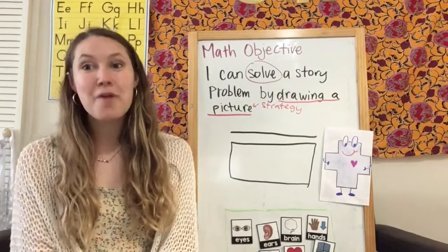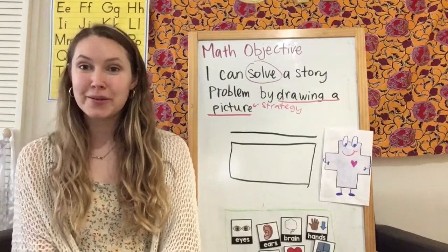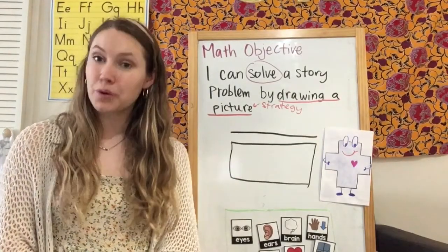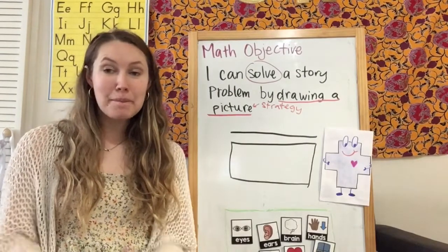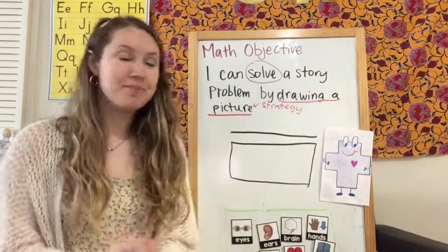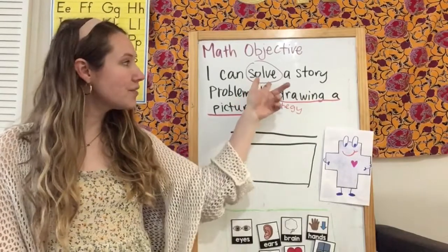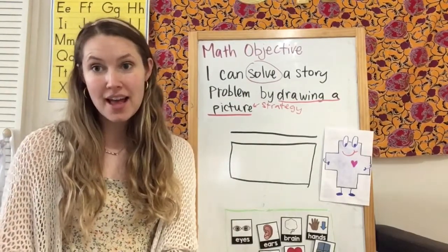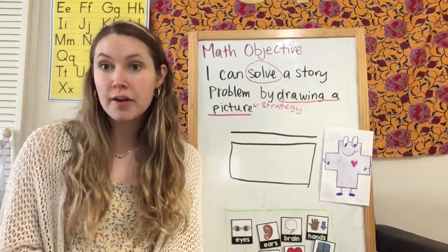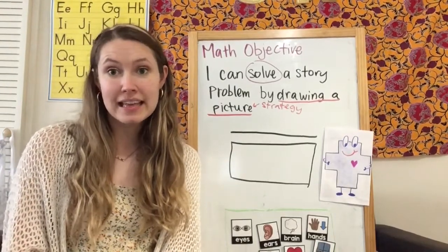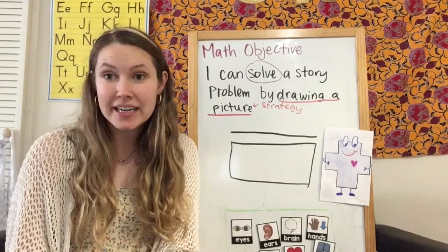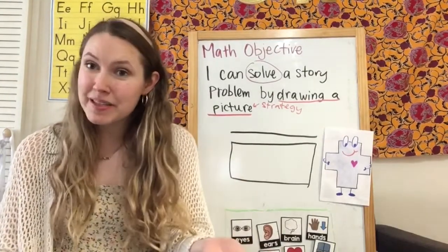Objective is what we are going to learn. I can solve a story problem by drawing a picture. So I circled the word solve here. We haven't really used that word yet, but to solve means that we are going to be finding the answer. And the way that we find the answers to math problems is by writing a number sentence, which is what we've been doing.